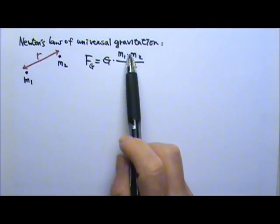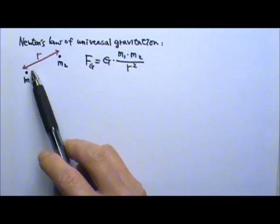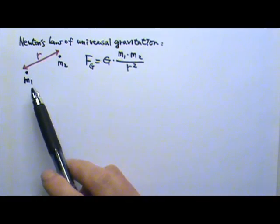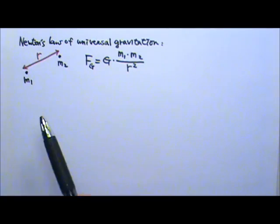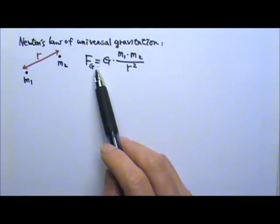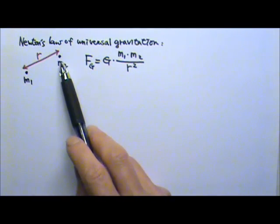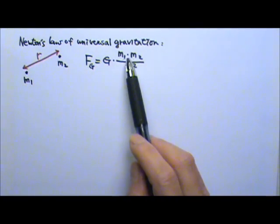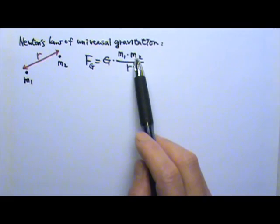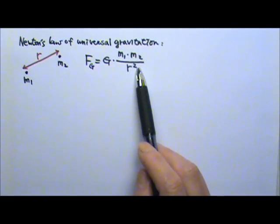Newton's law of universal gravitation says that if you have two pieces of mass, m1 and m2, and their distances are apart, the gravitational attraction force between the two pieces of mass is the big G, a constant times the m1 times m2 divided by the distance r squared.